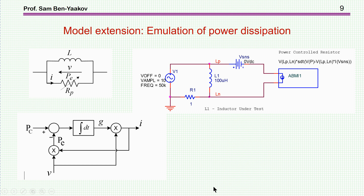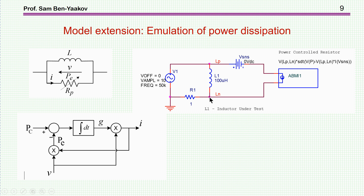Another extension incorporated in the model is to represent the losses by a resistor across the inductor. This is a virtual resistor that consumes the power calculated by the equation I have shown. This has to be calculated online while the simulation is running. We emulate a resistor by a current source: here is the inductor, and this is a current source which consumes a current such that the power absorbed is equal to the power calculated by the modified equation.